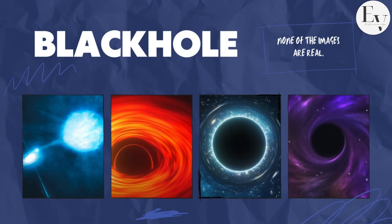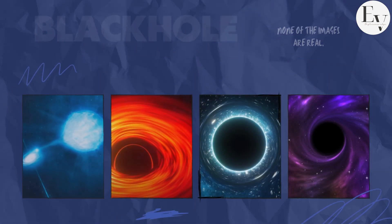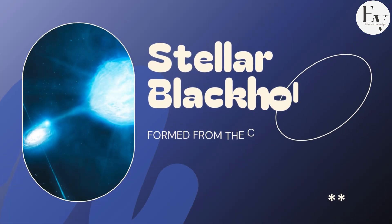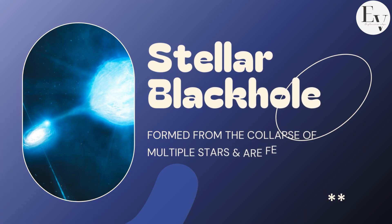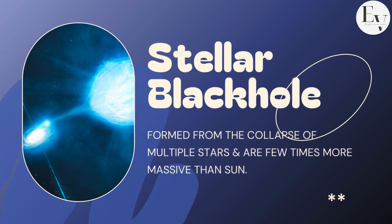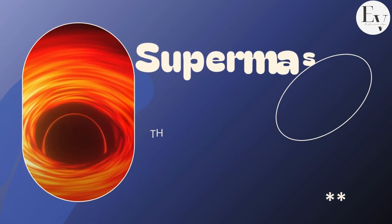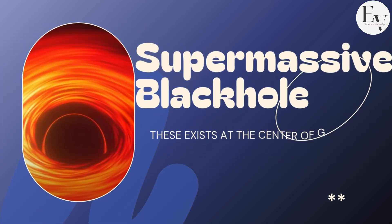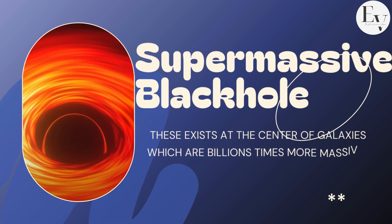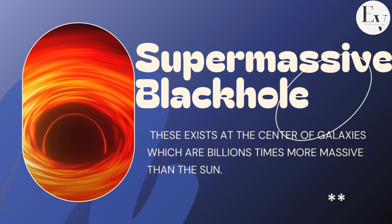As we know, there are mainly four types of black hole. The first one is stellar black holes, which are formed from the collapse of massive stars and are a few times more massive than the sun. The second one is supermassive black holes, which exist at the center of galaxies including our Milky Way and are millions or even billions of times more massive than the sun.